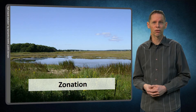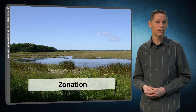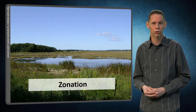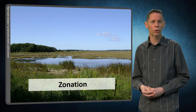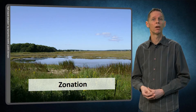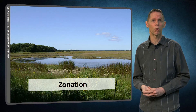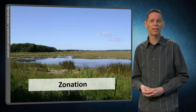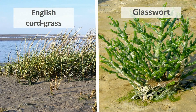We speak of succession zonation when the different stages of succession can be seen in spatially separated zones. For instance, succession zonation often occurs within temperate salt marshes from the intertidal flat towards the land. The closest zone to the intertidal flat is called the pioneer zone and is inhabited by pioneer species such as English cord grass and glasswort.